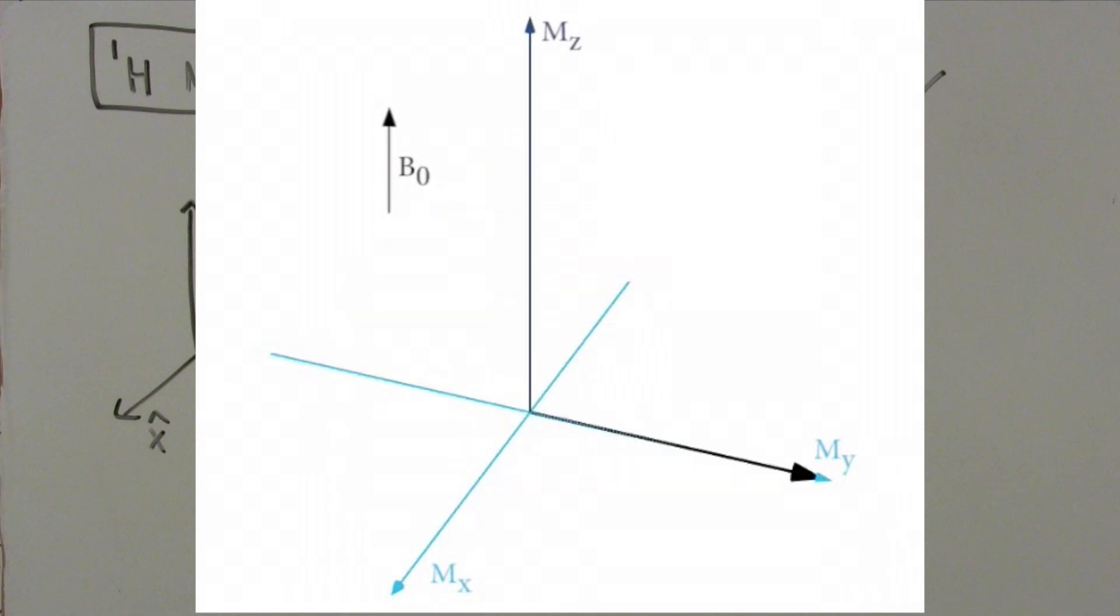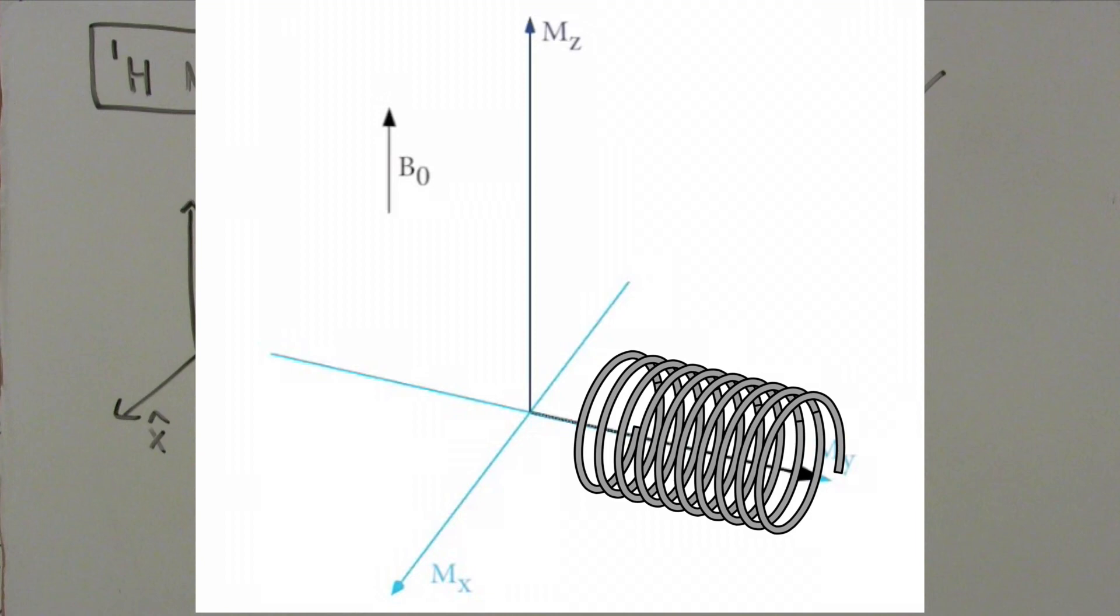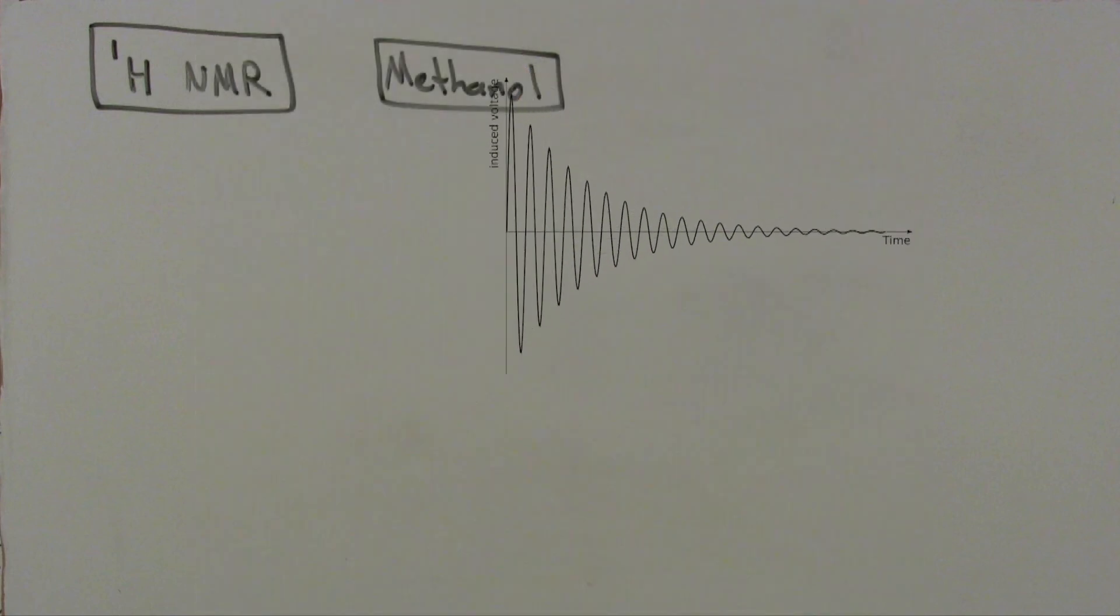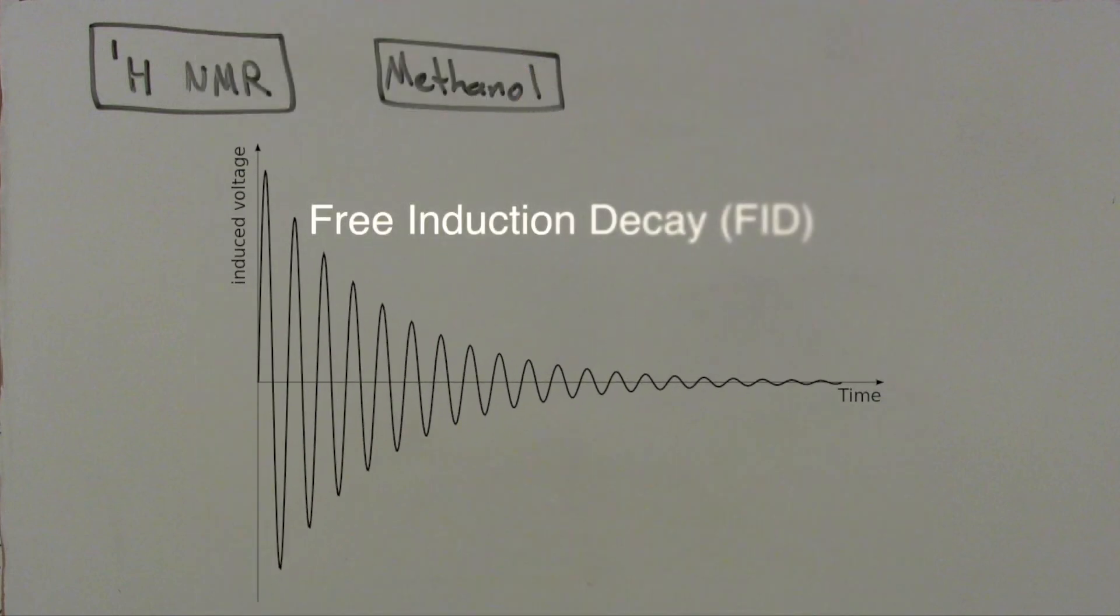This wobbling precession induces a current in a receiver coil, a coil of wire that surrounds the NMR sample. The induced signal that results from this relaxation is called the free induction decay, and it encodes all of the precessional frequencies exhibited by the sample.